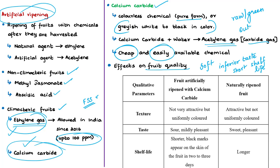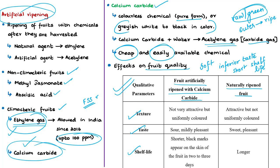A table is provided showing how to identify artificially ripened fruits from naturally ripened fruits, giving differences in terms of texture, taste, and shelf life. This is helpful not only for examination purposes but also in daily life. The problem with calcium carbide is not only that it is illegal, but also that it has serious potential health effects.